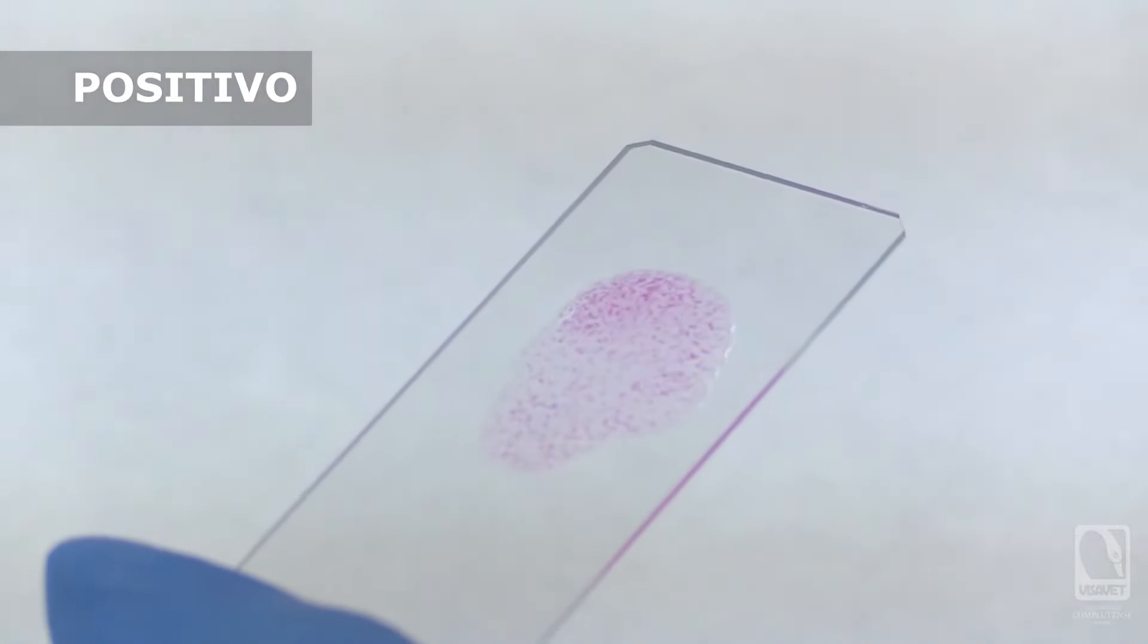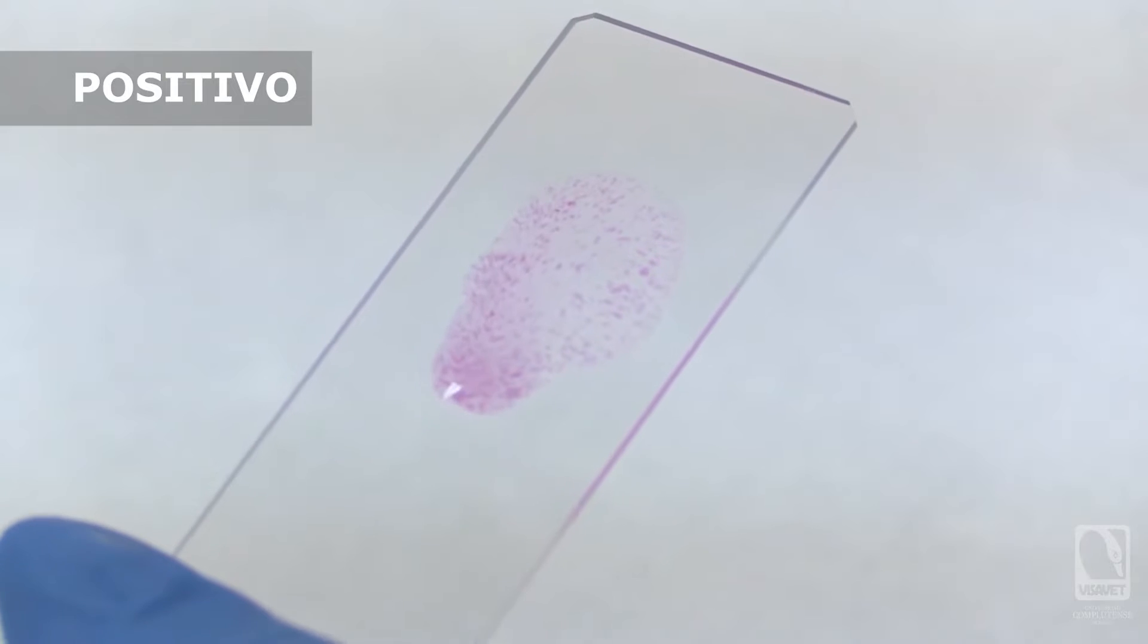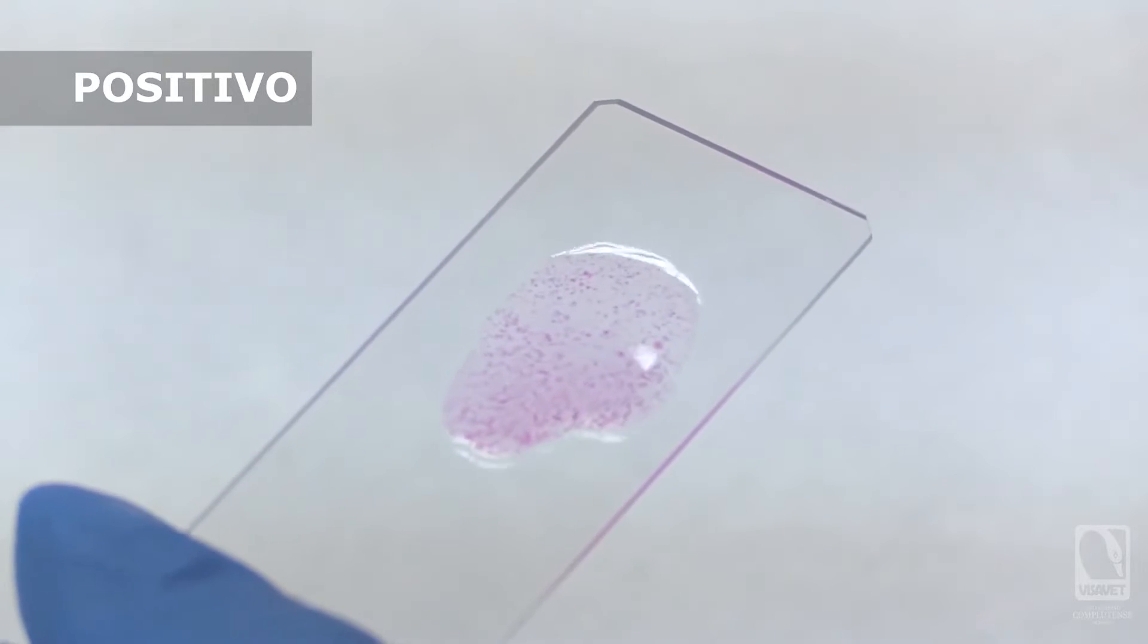If our test results show a positive sample, we will see the formation of distinct pink lumps. This agglutination will be clearly discernible, which we can see clearly thanks to the dye I mentioned before.